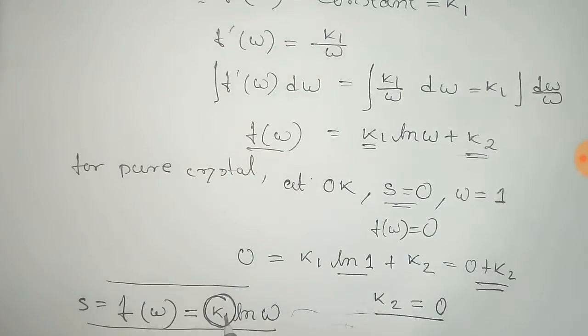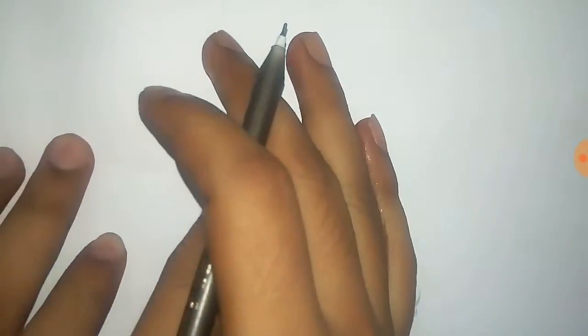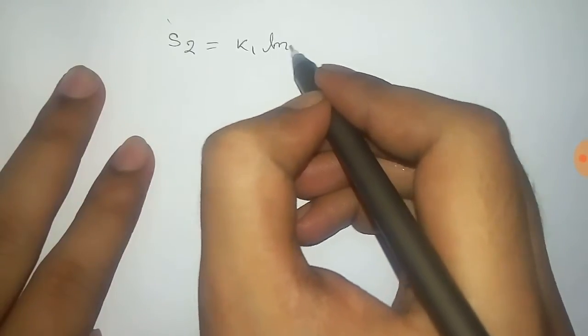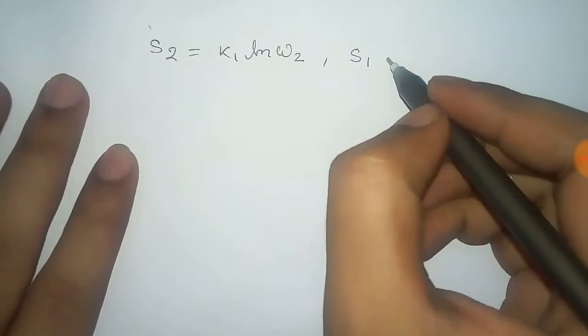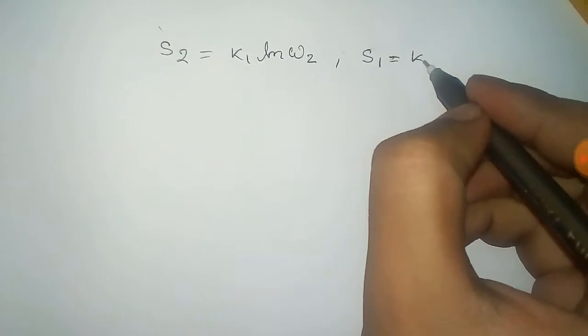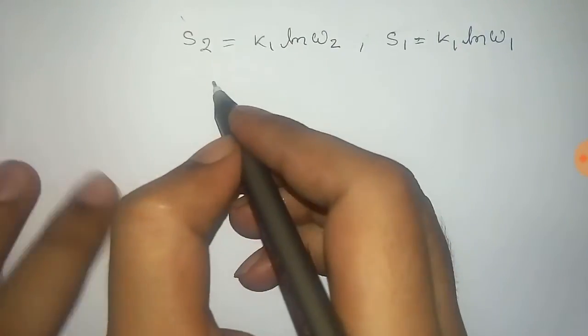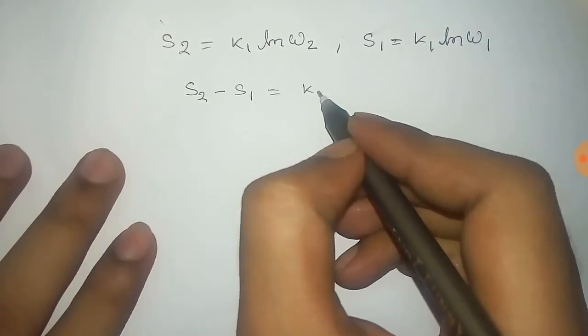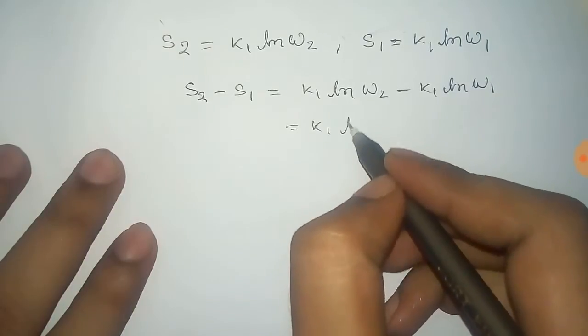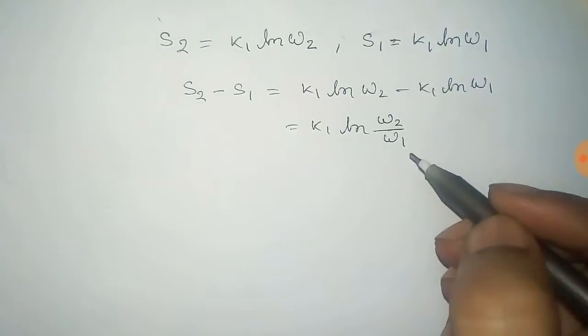The equation generalizes to S equals f(Omega) equals k1 · log(Omega). To calculate k1, take two systems: S2 equals k1·log(Omega2) and S1 equals k1·log(Omega1). Subtracting gives S2 minus S1 equals k1·log(Omega2) minus k1·log(Omega1), which equals k1·log(Omega2/Omega1).